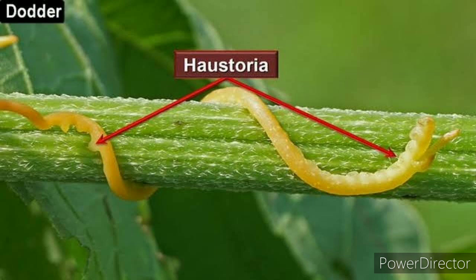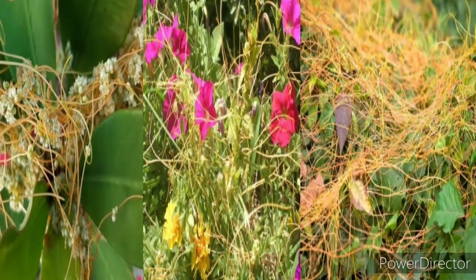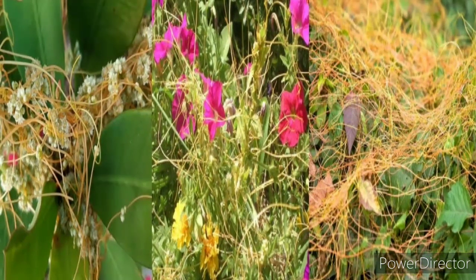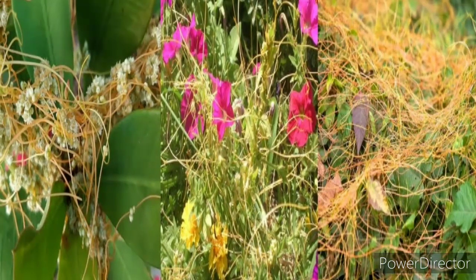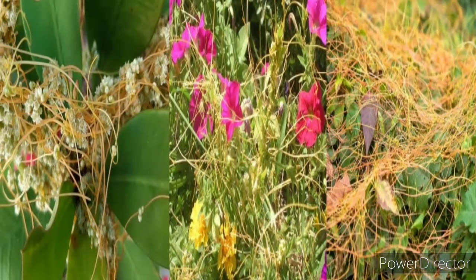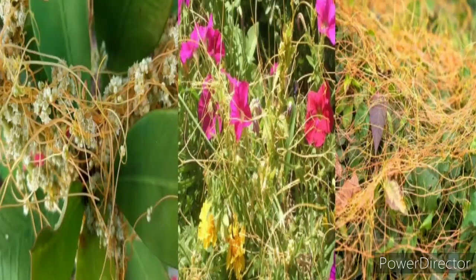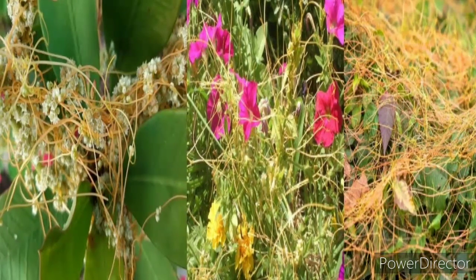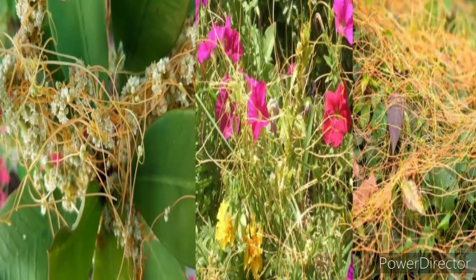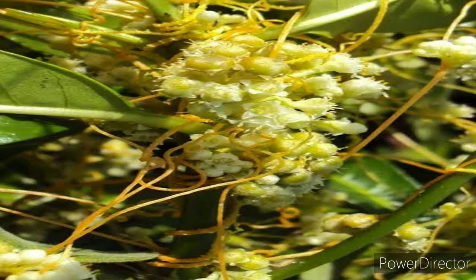The dodder plant has slender stems which are string-like. They may be yellow, orange, pink, or brown in color. It also has flowers which can be pink, yellow, or green in color. Seeds of the dodder plant can germinate without a host, but it needs to find a host within 5 to 10 days of germination.